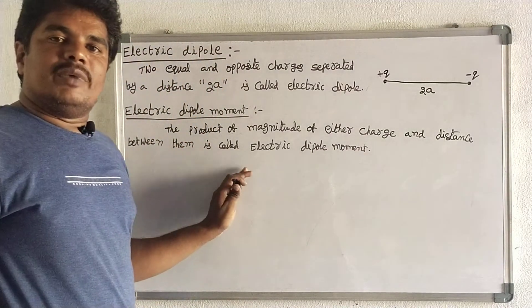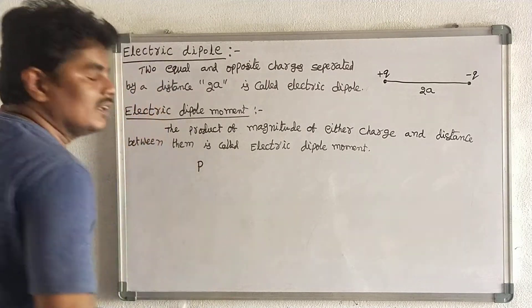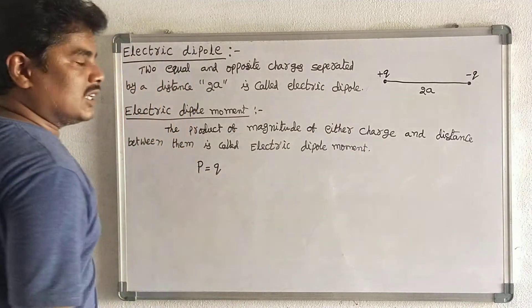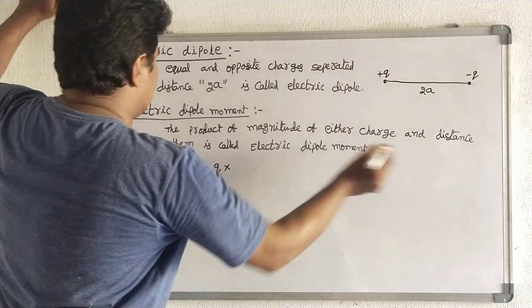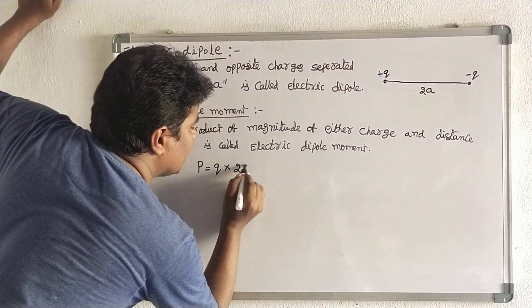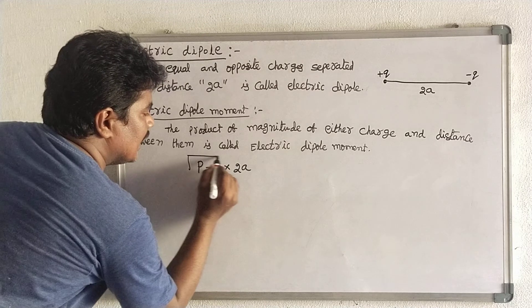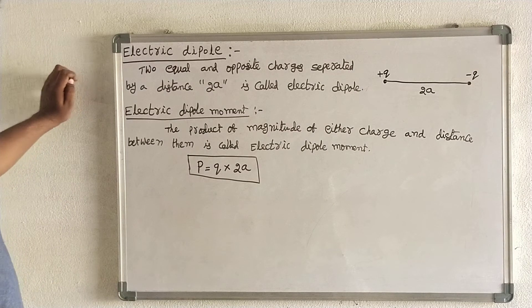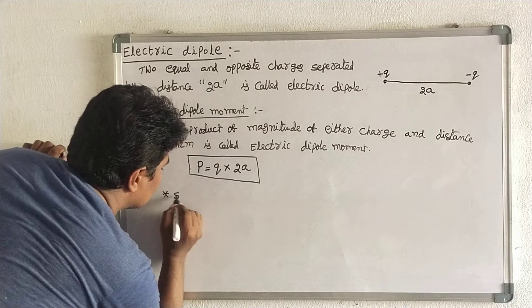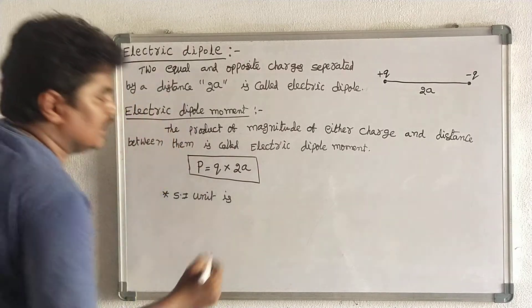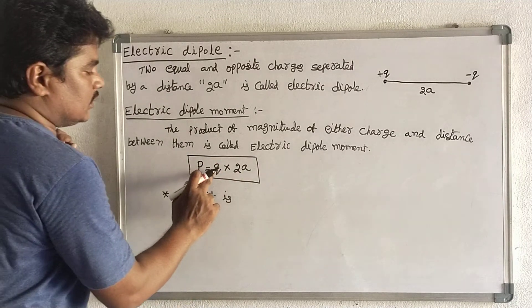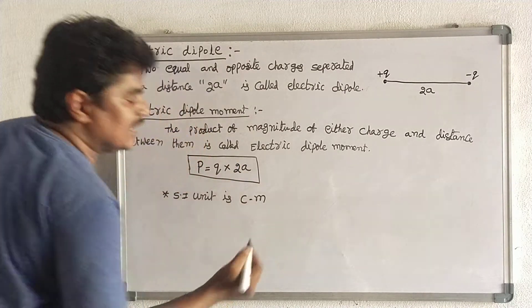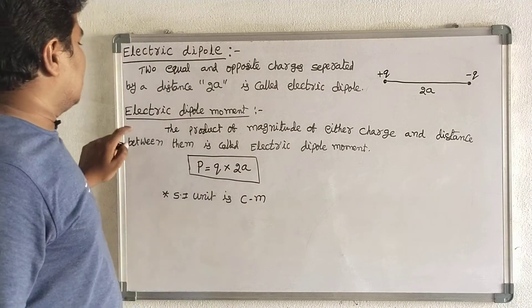Electric dipole moment is represented by the letter P. So the formula is: P is equal to the magnitude of either charge Q multiplied by the distance between them, which is 2a. So P equals Q times 2a. This is the formula of dipole moment. The SI unit: the unit of charge is coulomb, the unit of distance is meter, so the SI unit of dipole moment is coulomb meter.